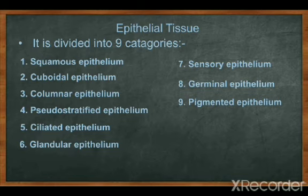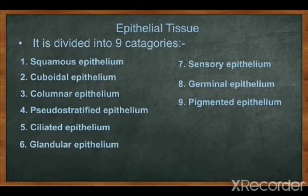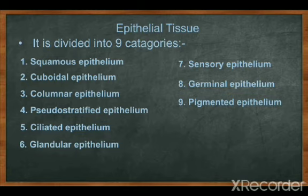There is no direct blood supply to this tissue. It is non-nervous in nature, meaning no nervous tissue is present in it and no sensation or stimulus is present. The cells are different in shape — flattened, cuboidal, columnar — and cilia may be present, so they are called ciliated.